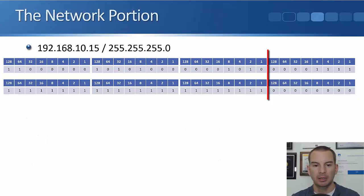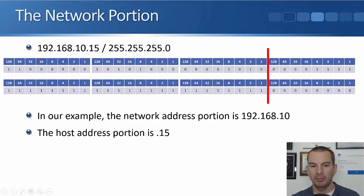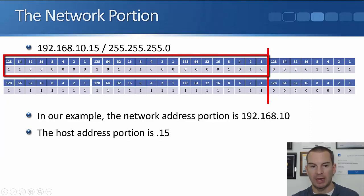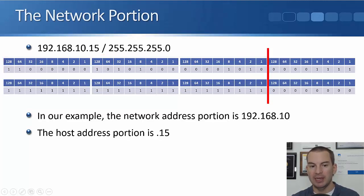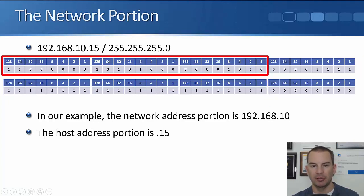With the subnet mask 255.255.255.0, the subnet mask always has contiguous ones. The ones come up to a certain point, and I've put a line in — that line is the border between the network portion and the host portion. In our example, the network address portion is 192.168.10, which is everything to the left of the line. Whatever is after the line is the host portion — in our example, that is .15.